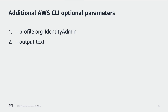For the demonstration coming up next, I will add two additional options to the CLI commands. The first is to specify a unique AWS CLI profile with short-term credentials called org-identity-admin. I use this profile that federates to an IAM role using short-term credentials to query IAM Identity Center. AWS recommends using short-term credentials instead of an IAM user with long-term credentials. The second option is to output as text for better readability, also helpful for scripting the output from one command as input for another.